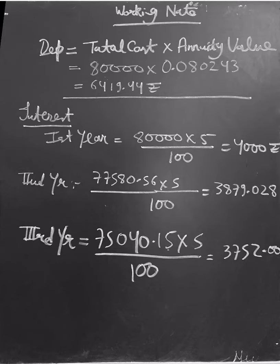Now I'm showing you how to calculate interest. Interest equals the balance on the first day of the year multiplied by rate divided by 100. Rate is 5%. In the first year, the balance is 80,000, so 80,000 times 5 divided by 100 equals 4,000.